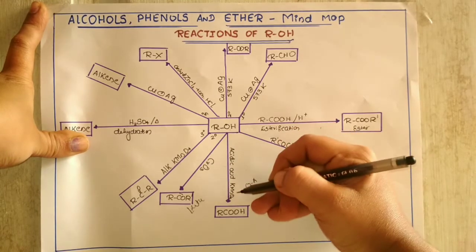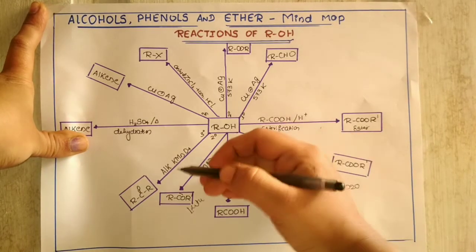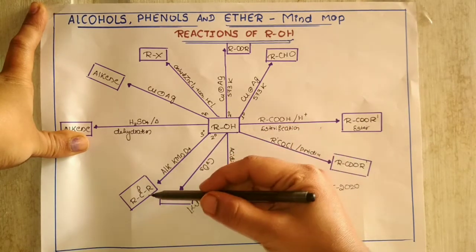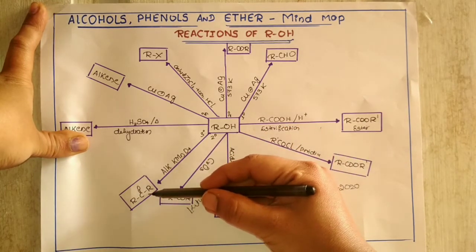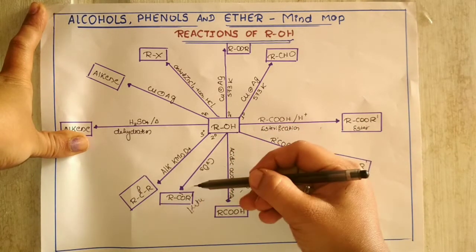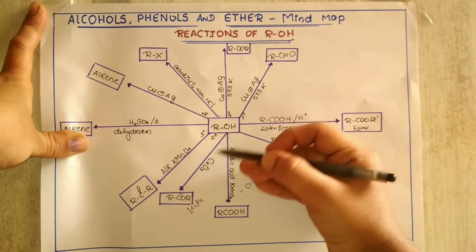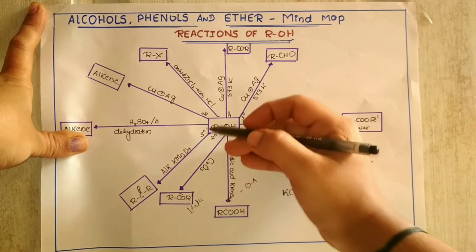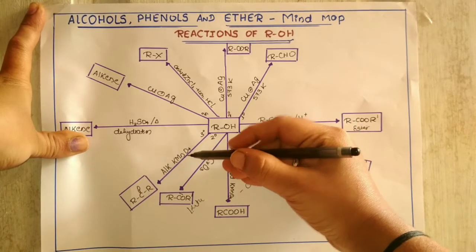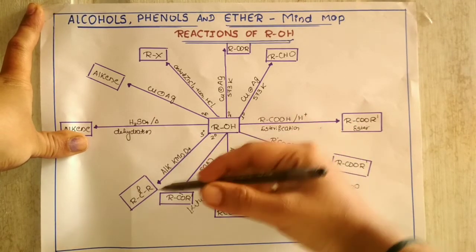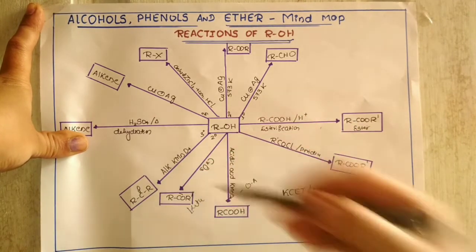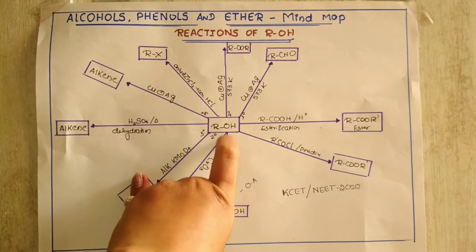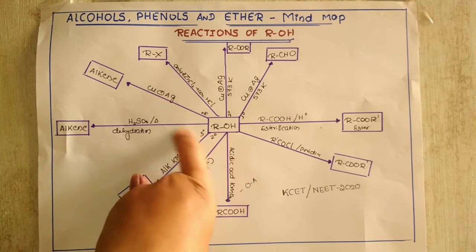Similarly, when alcohol is treated with alkaline potassium permanganate — here we used acidic KMnO₄ earlier, and now we are using alkaline KMnO₄ — we are going to get a ketone. In both cases we get ketone: secondary alcohol in the presence of CrO₃ gives a ketone, and in the presence of alkaline KMnO₄ we also get a ketone.